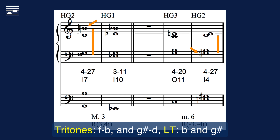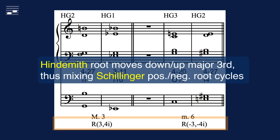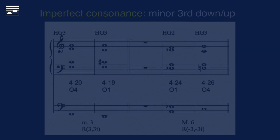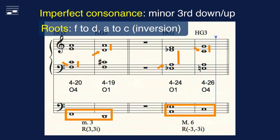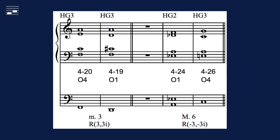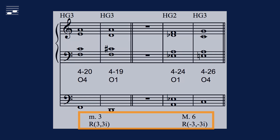In this example we introduce chord connections involving a tritone interval, so we must find both the root and the leading tone, as indicated with orange symbols in the score and shown in the lower staff. Hindemith considers the root movement by descending major third or minor sixth the next best connection — again mixing Schillinger positive and negative root cycles by diatonic major thirds or four semitones.